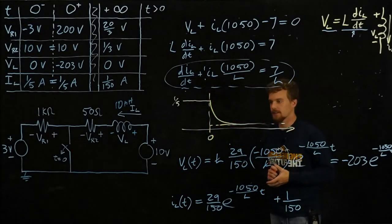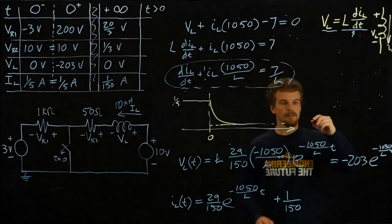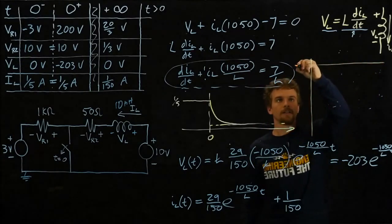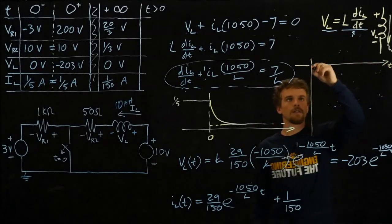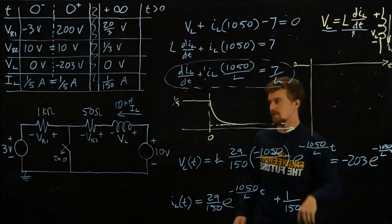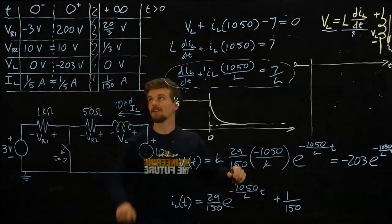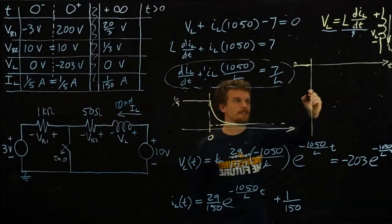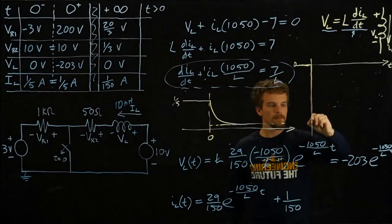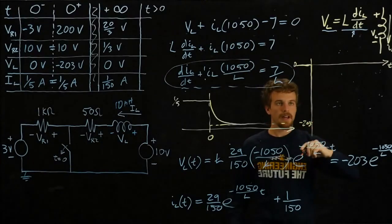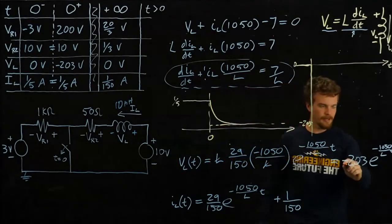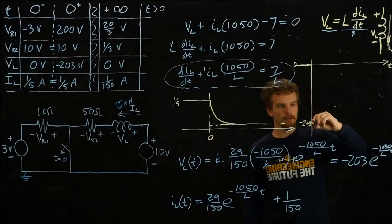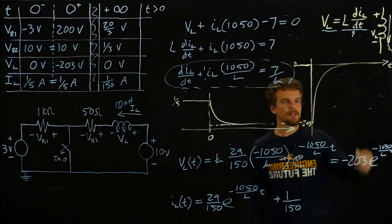Now what does VL look like? VL looks like this. So before t equals 0, it's 0, and then all of a sudden when that switch change happens, it jumps all the way down to minus 203 and then slowly decays. Where's our expression for it? This expression describes it in time. It's actually not slowly, it's quickly decaying, but that decays back to t equals 0.